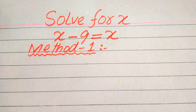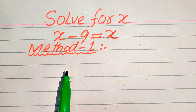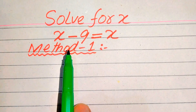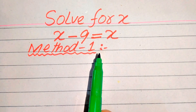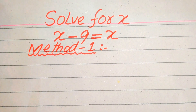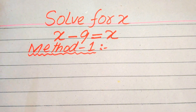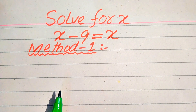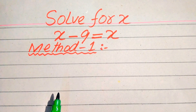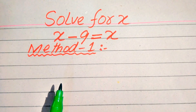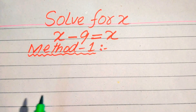Hello everyone. Today I want to show you how to solve this problem for the values of x, if we have x minus 9 is equals to x and we can solve the value of x. Here we solve this problem for two methods. I hope you like both of these methods, but if you have any other method in your mind, please do not hesitate to write it in the comment section.